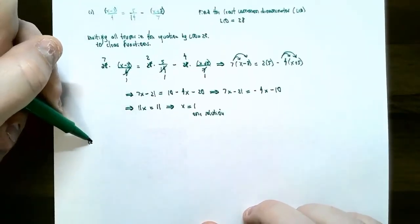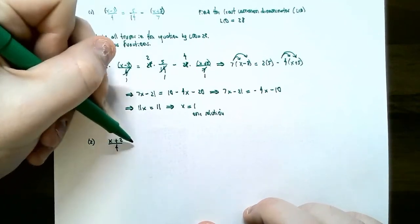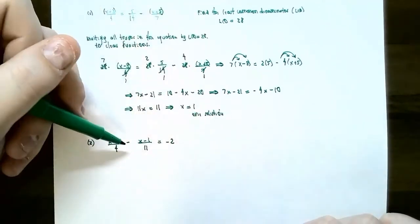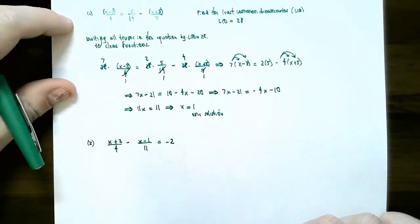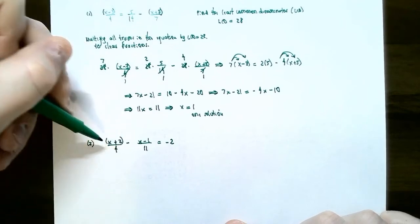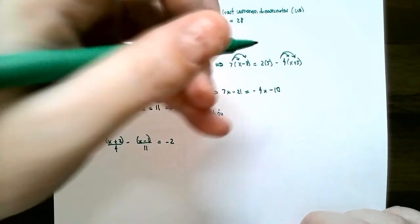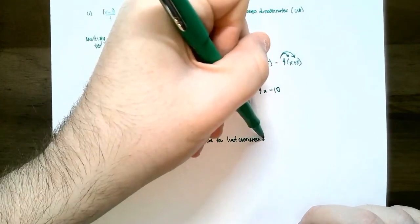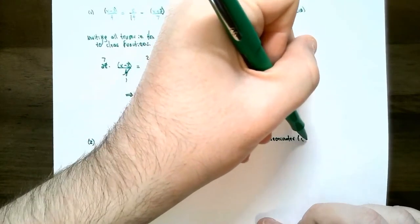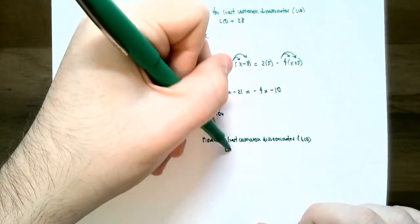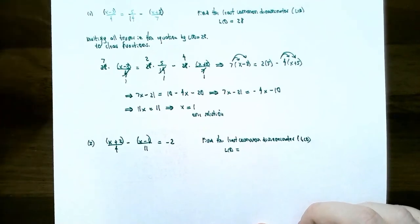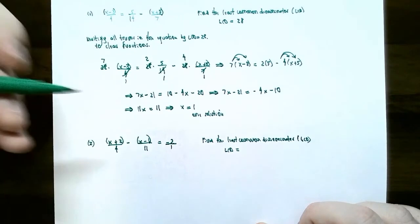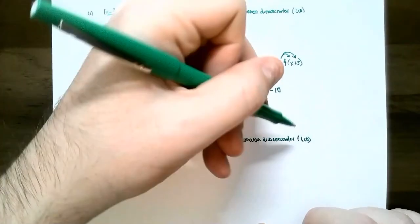Let's try one more. We solve the equation the quantity x plus 2 divided by 4, subtract the quantity x minus 1 divided by 11, equals negative 2. This is a linear equation because x's are to the first power and the denominators are constants — 4 and 11. Enclose the multi-term numerators in parentheses. The least common multiple of 4 and 11 is 44, so the LCD is 44.